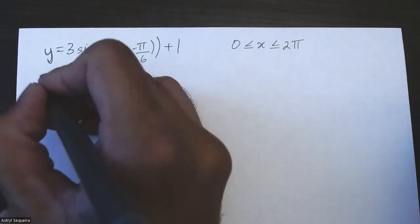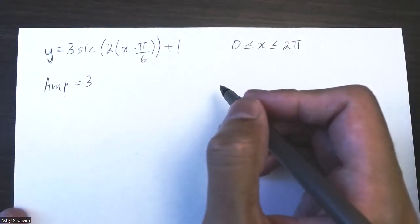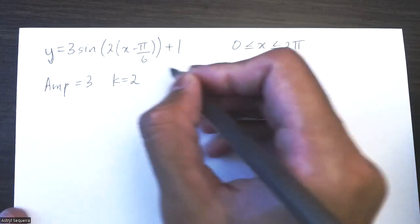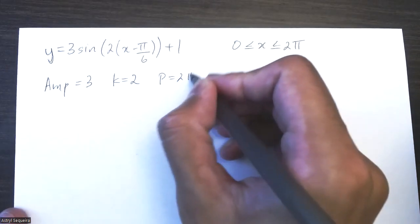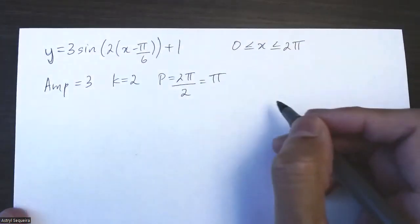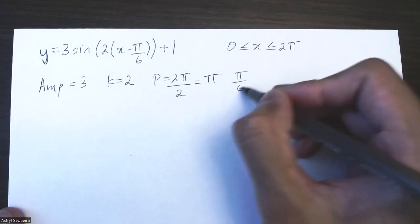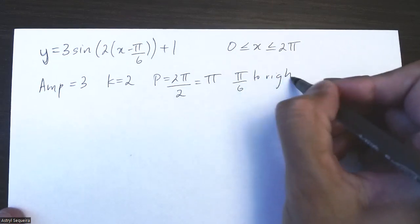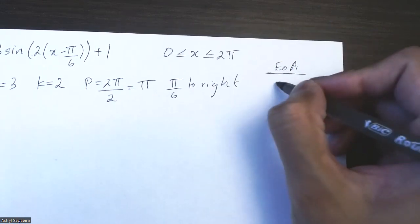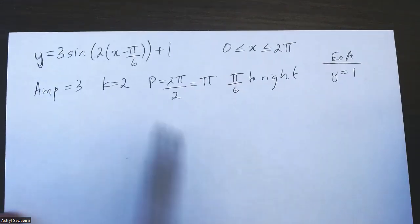The amplitude of this function is three. The k value is two, so the period is two pi divided by k, which is two pi over two, giving us pi. We have a phase shift of pi over six to the right, and our equation of axis is y equals one, our c value.